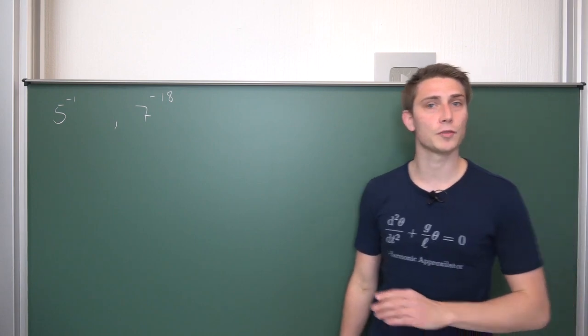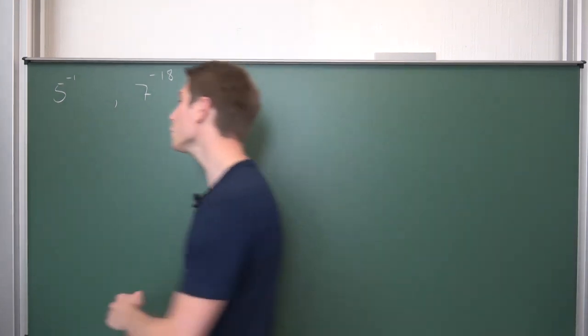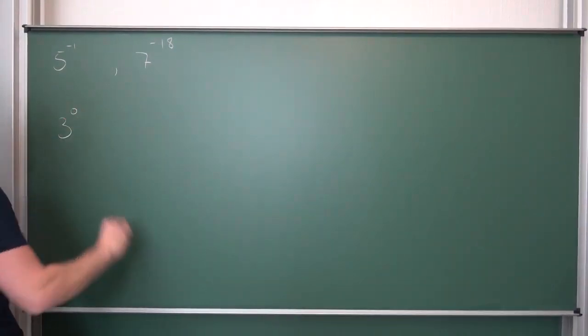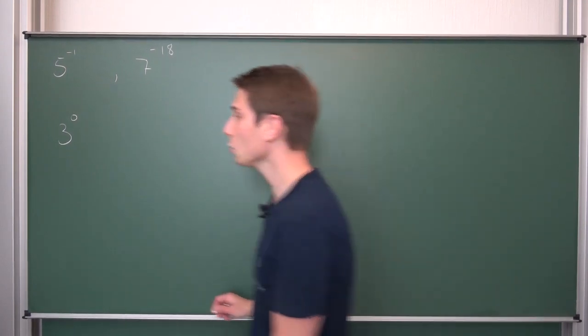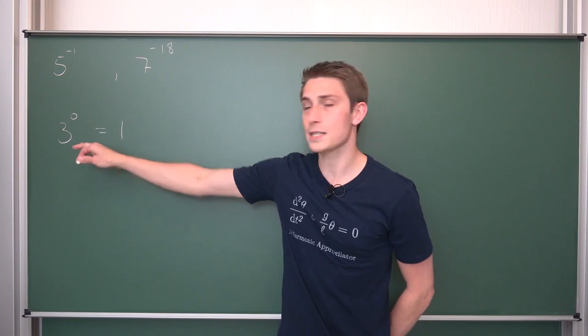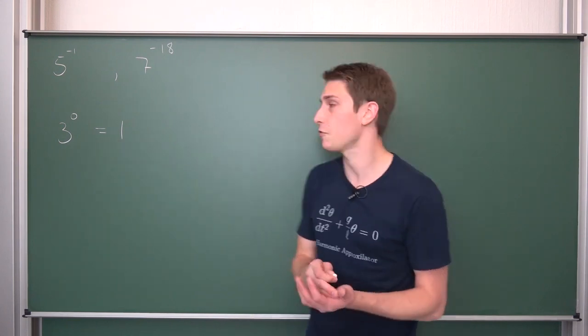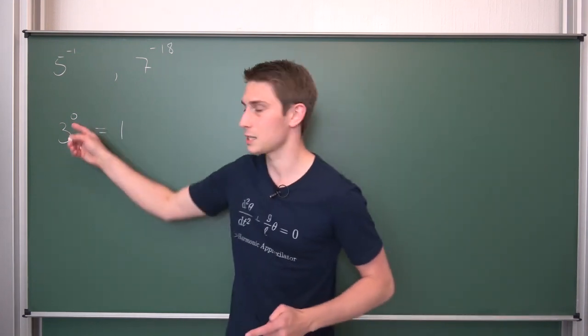We are going to start off with something really easy, something we have derived last time around. So 3 to the 0th power. Something to the 0th power, 0 to the 0th power is nothing but 1. As long as our base is not equal to 0, this is well defined and nice to handle. Now I would like to rewrite this 0 here.